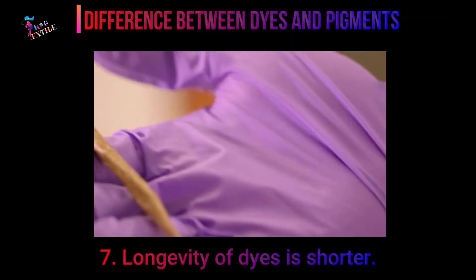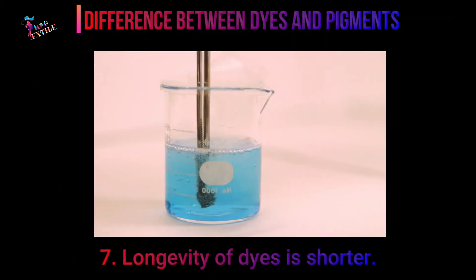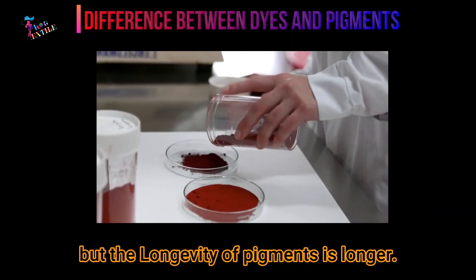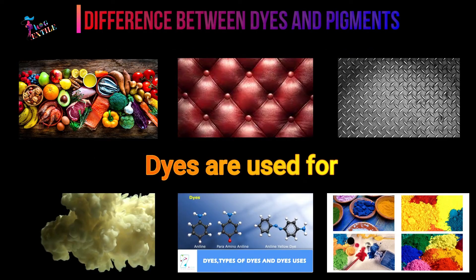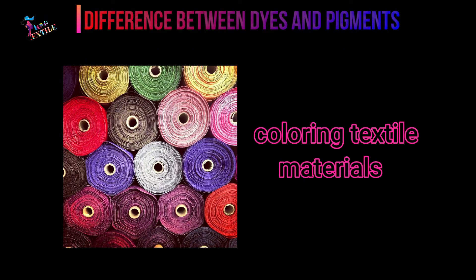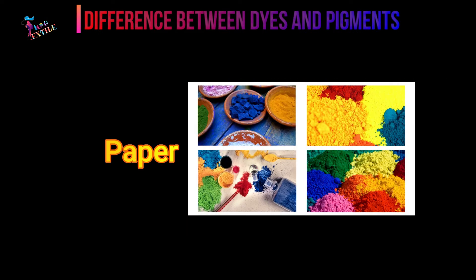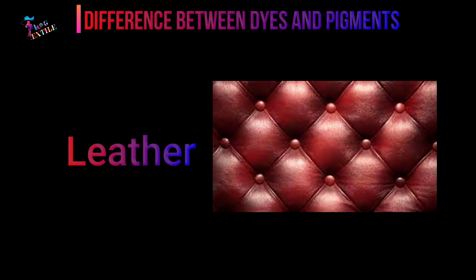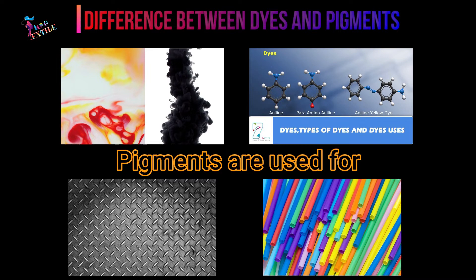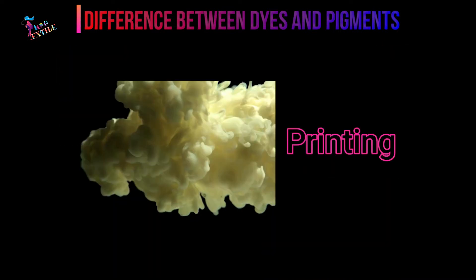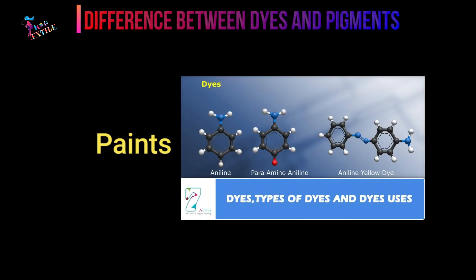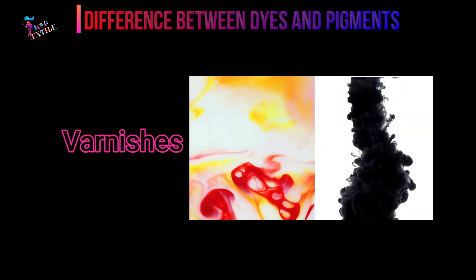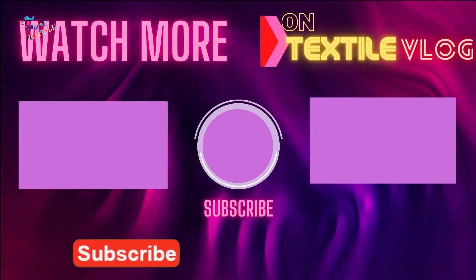7. Longevity of dyes is shorter, but the longevity of pigments is longer. 8. Dyes are used for coloring textile materials, foodstuffs, paper, leather, etc., while pigments are used for printing and for coloring plastic, metal, paints, and varnishes.